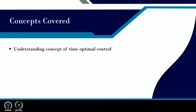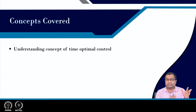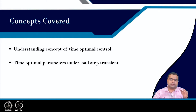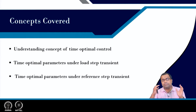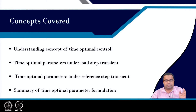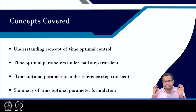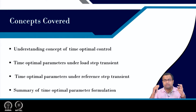In this lecture, we will cover the concept of time optimal control, which we have already introduced in the previous lecture, then how to formulate the time optimal parameters. We are taking a buck converter as a case study under load step transient, then the time optimal parameters under reference step transient, and a summary covering the role of capacitor, inductor selection in recovery time, overshoot, voltage undershoot, and current overshoot.